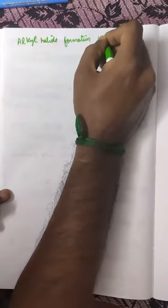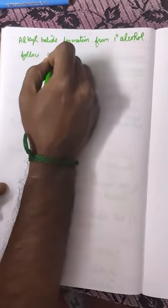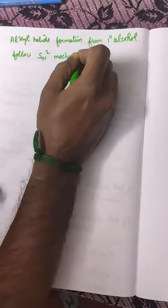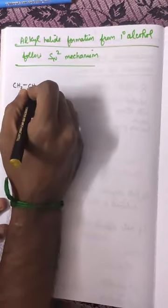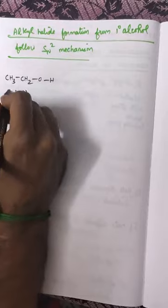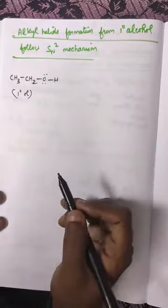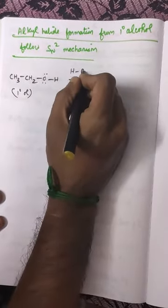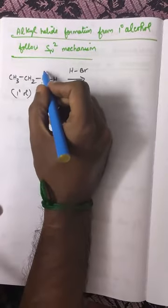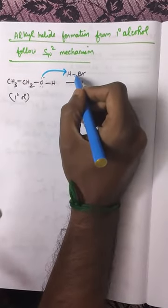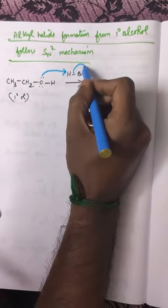Now we are going to discuss the alkyl halide formation from primary alcohol. From primary alcohol it will follow SN2 mechanism. Let us see how this mechanism takes place. I am going to take primary alcohol: CH3–CH2–OH. Here the functional group contains an oxygen and hydrogen, and that oxygen contains two lone pairs of electrons. It is made to react with hydrogen bromide, and as a result one lone pair will make a bond with hydrogen.